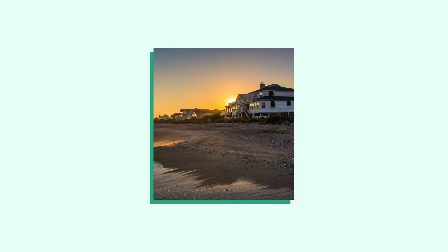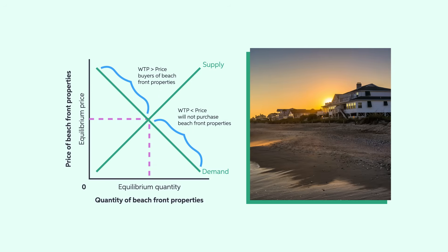For example, let's consider the allocation of beachfront houses. Since there can only be a limited number of houses near the beach, not everyone can enjoy the luxury of living in a beachfront house. So, who gets to enjoy the resource? Those consumers who are willing and able to pay the price of beachfront houses get to live in these houses, while the rest do not. The price of houses adjusts until the quantity demanded of beachfront houses matches the quantity supplied.